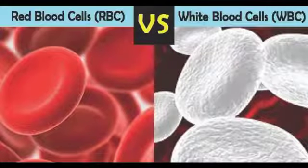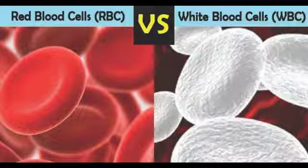Good morning, my dear students. Red blood corpuscles, that is RBCs, are the most abundant cells in the human body. These are spherical biconcave cells without nucleus.